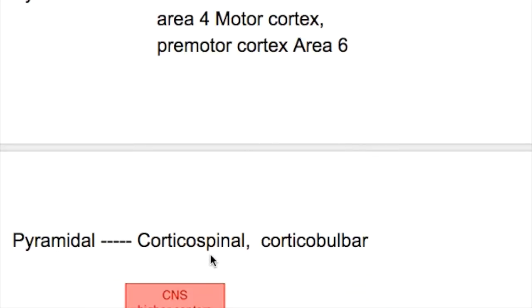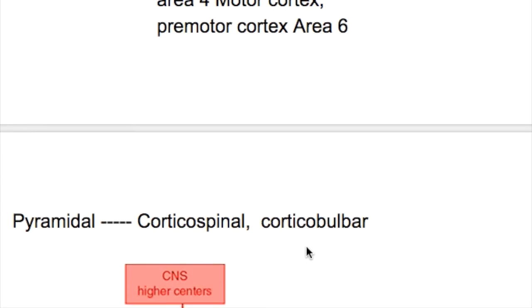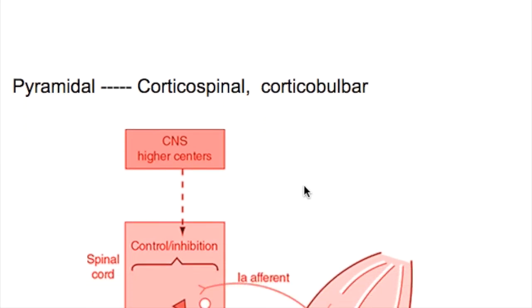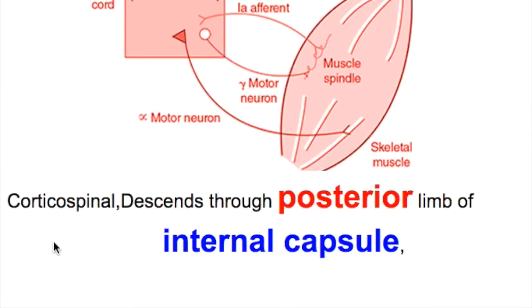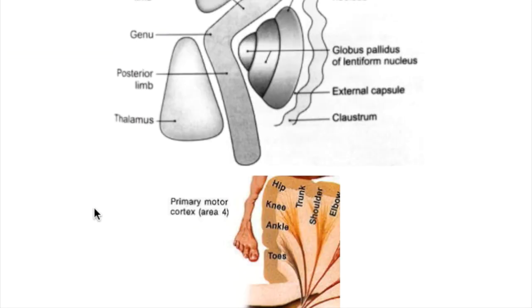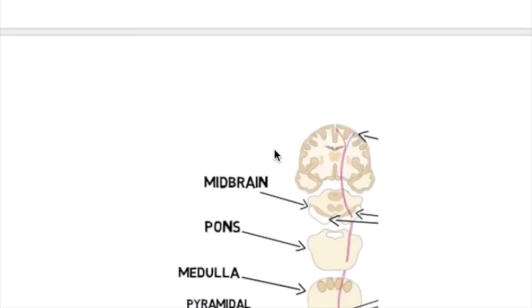There are two types of pyramidal tracts: the corticospinal and the corticobulbar tract. The corticospinal tract ends on the anterior horn cells of the spinal cord, and the corticobulbar tract ends on the lower motor neuron of the cranial nerve nuclei in the brain stem. The corticospinal tract descends through the posterior limb of the internal capsule.